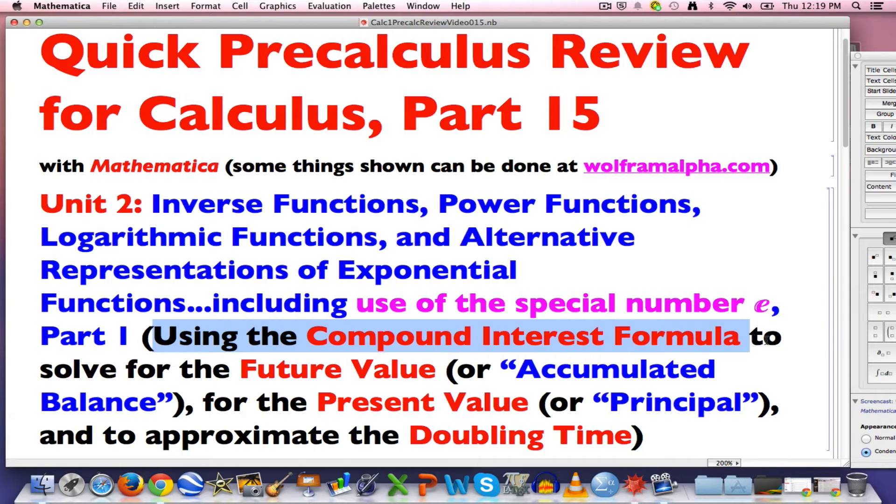We're going to do a basic compound interest formula problem where we know the initial deposit and want to find what's called the future value or accumulated balance of the account, or where we know what we want to have in the account after a certain number of years and figure out the present value, the principal, that we should deposit initially to get that future value after a certain amount of time, and finally to approximate something called the doubling time of the account.